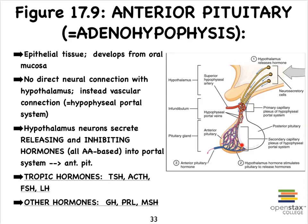This epithelial tissue that makes up the anterior pituitary is actually developed from our oral mucosa — from our mouth. Remember, the posterior pituitary developed from the brain. Now, we do not see axons reaching all the way from the hypothalamus into the anterior pituitary; we see a different anatomy.